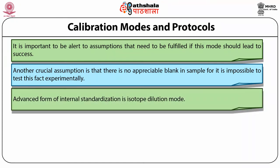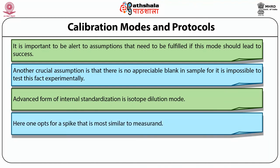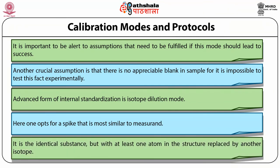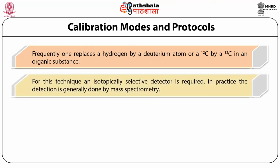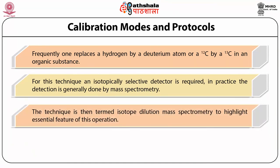The most advanced form of internal standardization is the isotope dilution mode. Here one opts for a spike that is chemically more similar to the analyte — it is the identical chemical substance but with at least one atom in the structure replaced by another isotope, frequently replacing a hydrogen by deuterium or a ¹²C by ¹³C in an organic substance. If only ions or atoms are determined, one adds a known amount of the ion or atom in different isotopic abundances so that the isotopic ratio of the sample is altered. This technique requires an isotopically selective detector, so in practice detection is generally done by mass spectrometry — termed isotope dilution mass spectrometry.